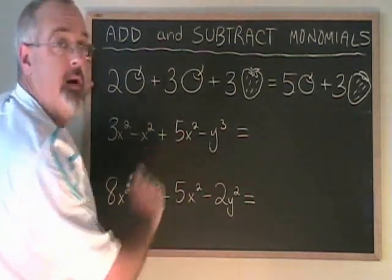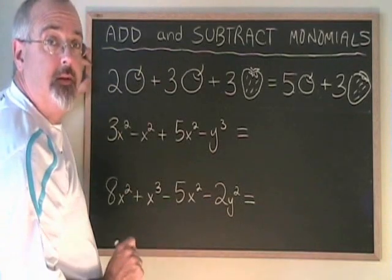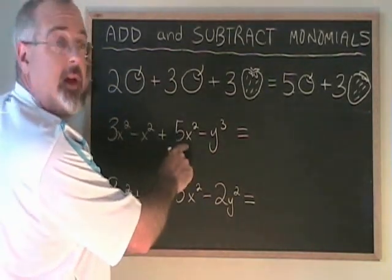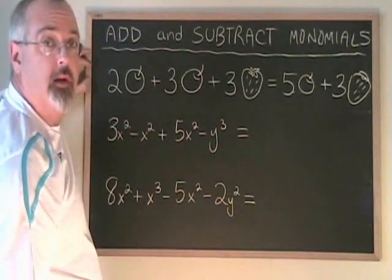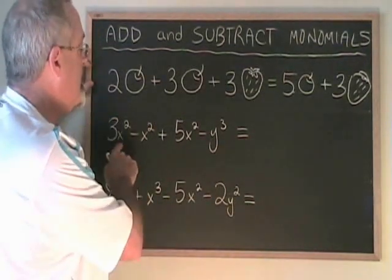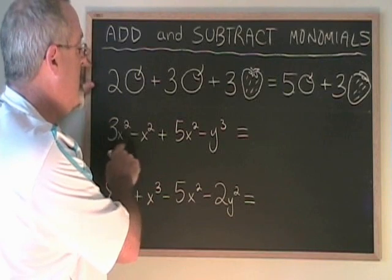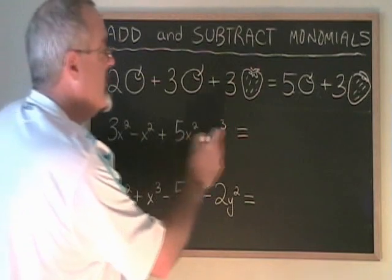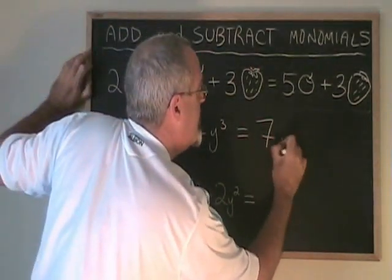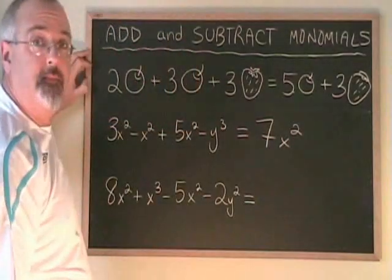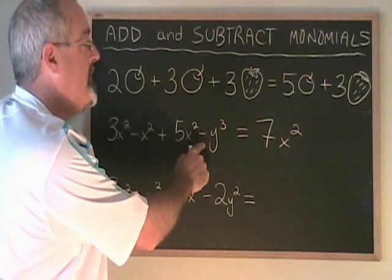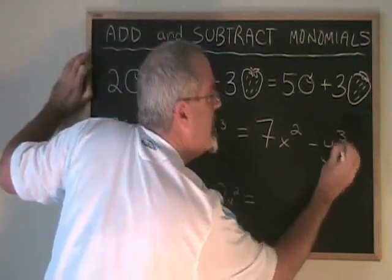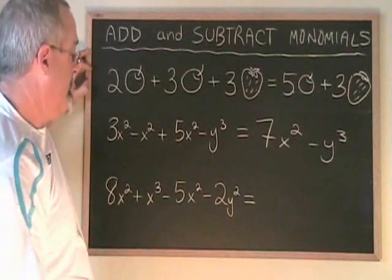There are two types of term here: we have three different terms that have x squared, and we only have one term with y cubed. Let's combine our x squared terms: three x squared minus x squared equals two x squared, plus another five x squared equals seven x squared. The dissimilar term, minus y cubed, is kept separate, and this is our final answer.